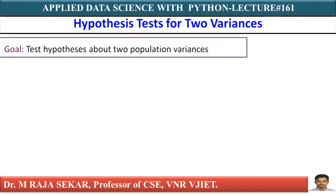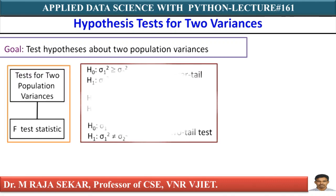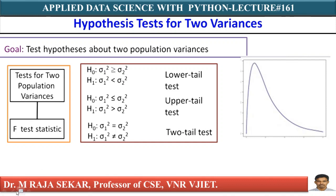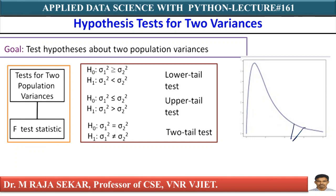The goal is to test hypothesis about two population variances. We have three possibilities for the alternative hypothesis. If your alternative hypothesis has a less-than symbol, that must be a left-tail test or lower-tail test. This is the F-distribution curve. For an upper-tail test, if H1 has sigma 1 squared greater than sigma 2 squared, the critical region is under the right tail. If the alternative hypothesis has a not-equal symbol, that is a two-tail test, with the critical region split half on the left side and half on the right side.